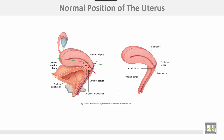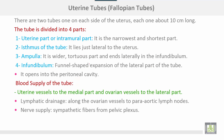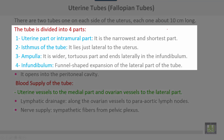The uterine tubes, or fallopian tubes, are two tubes, one on each side of the uterus, each about 10 centimeters long. The tube is divided into four parts: number one, the uterine or intramural part, which is the narrowest and shortest part; the isthmus, which lies just lateral to the uterus; the ampulla, which is a wider tortuous part ending laterally in the infundibulum.